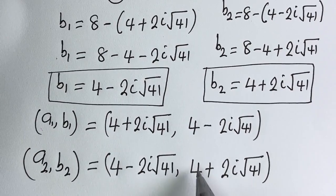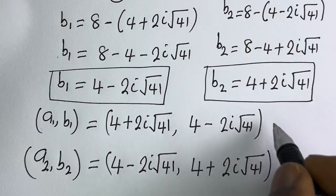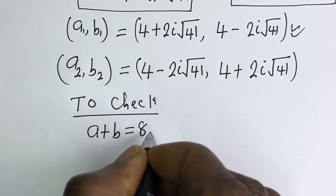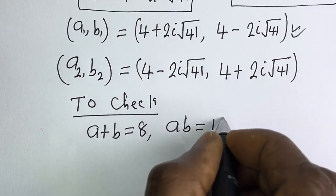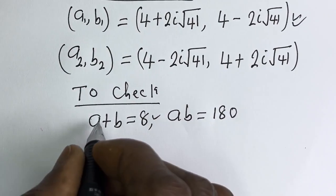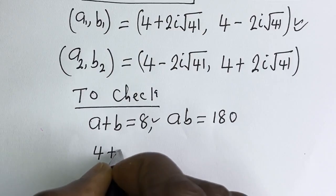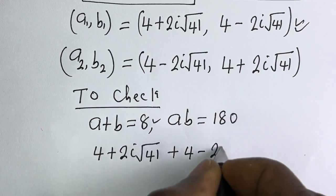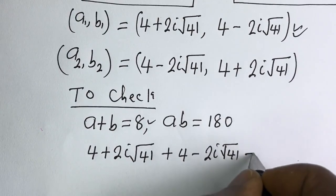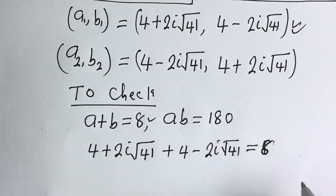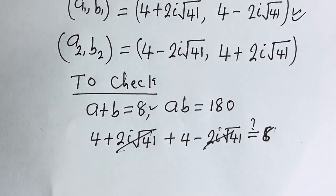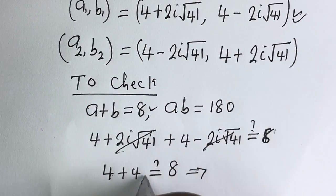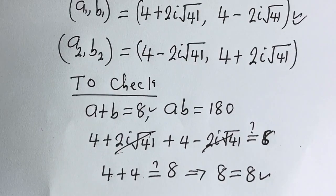We may check to confirm if this answer is right. Let's check using A1 and B1. For the first equation, A plus B: (4 plus 2i square root of 41) plus (4 minus 2i square root of 41) must equal 8. The imaginary terms cancel, and we have 4 plus 4, which equals 8. This is true.